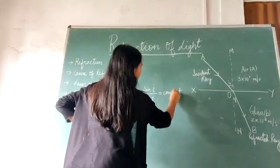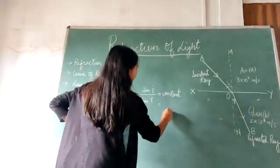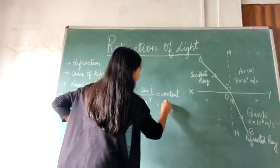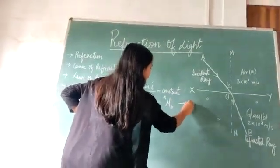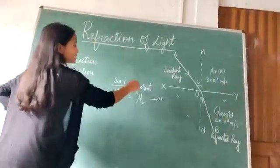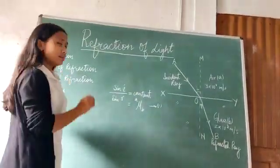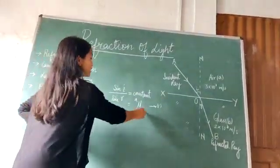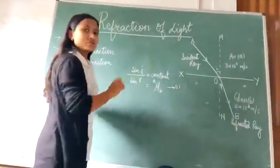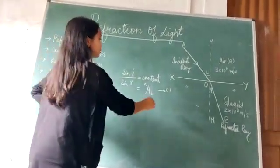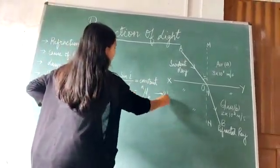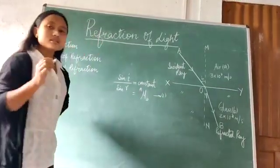And this constant, and this constant is mu, noted as mu AB. And this constant is known as the relative refractive index of this medium B with respect to the medium A. And this equation, and this equation one, it is known as the Snell's law.